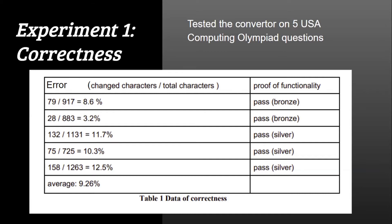Since the converter cannot produce a hundred percent perfect translation from Python to Java, we counted the number of characters that needed to be manually fixed in the converted Java source code before it executed without trouble. When the Java code executes successfully and passes the same USACO problem, we can confirm that it has the exact same functionality as the Python code. Since USACO checks whether a program can output specific numbers or strings, if the USACO testing website grades both the original Python and the converter's Java output as passing, it means those two files — before and after translation — have nearly the same functionality.